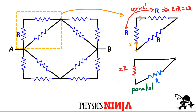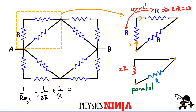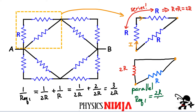In order to simplify this into one equivalent resistance between these points, we simply apply the formula: one divided by the equivalent resistance equals one divided by 2R plus one divided by R. We put things on a common denominator of 2R, multiplying through by two, and we're left with three over 2R. Taking the reciprocal, R equivalent one is simply equal to 2R divided by three.